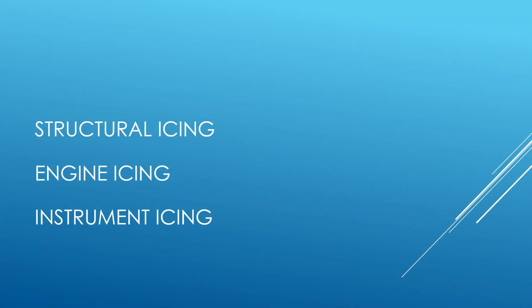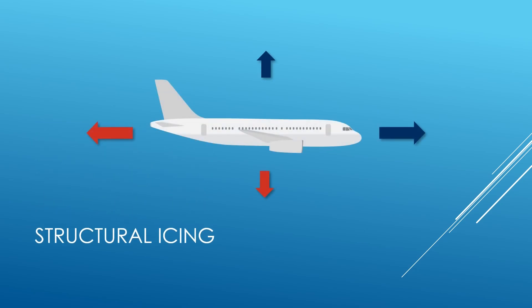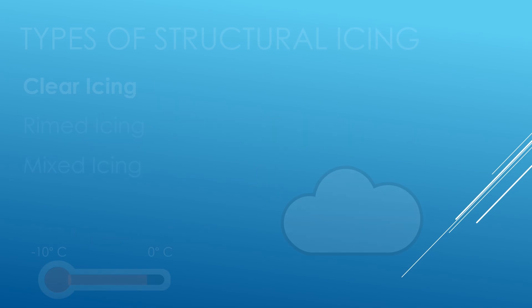There are three types of icing: structural, engine, and instrument. Structural icing forms around the airfoil and its control surfaces. Aircraft are affected by structural icing in several different ways, such as reducing thrust and lift caused by increasing weight and drag. These effects combine to increase the stall speed and reduce overall aircraft performance. The three types of structural icing are clear, rime, and mixed.